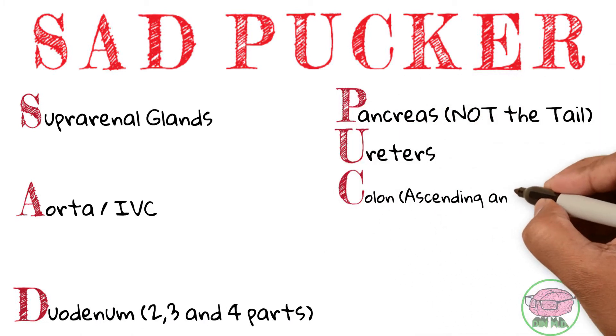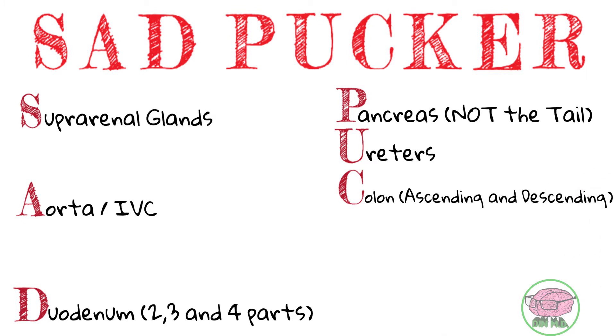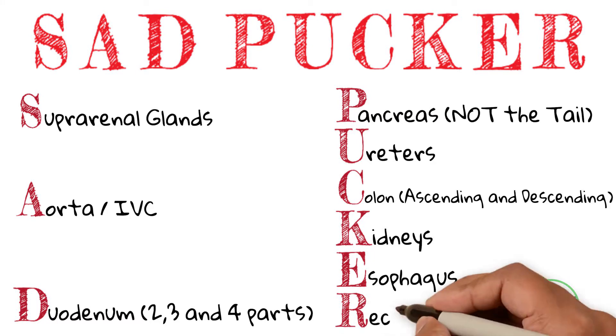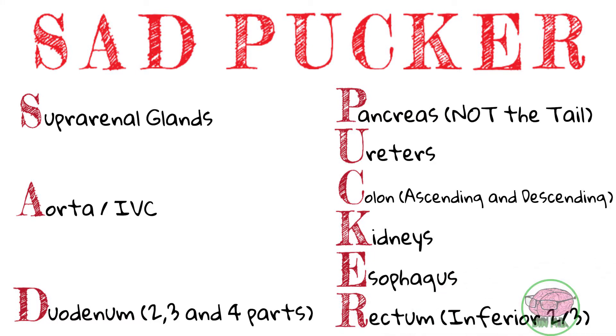C is for colon — both ascending and descending. K is for kidneys. E is for esophagus. And R is for rectum, the inferior two-thirds.